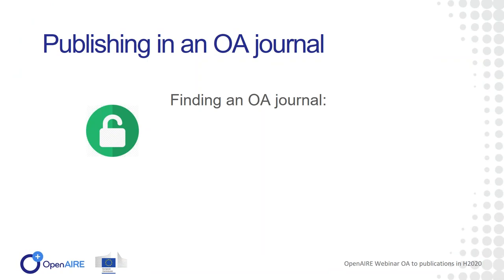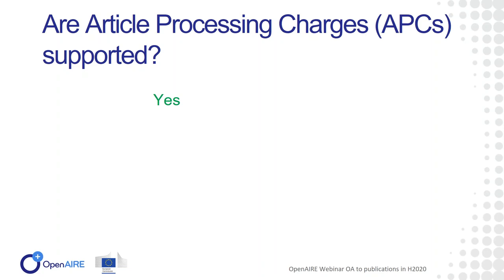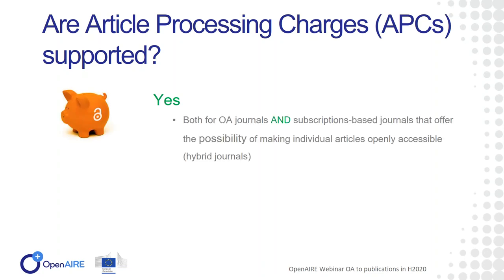How do you find an open access journal for your area? You can find a list of high-quality, peer-reviewed open access journals at the Directory of Open Access Journals, DOAJ.org, which also provides information about possible costs called article processing charges. These article processing charges are the cost for publishing in an open access journal that does not have any subscription, so they charge the author. They are supported by Horizon 2020 in open access journals, but also in subscription-based journals that offer the possibility of making an individual article open access — so-called hybrid journals.